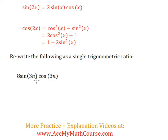So let's rewrite 8 sin 3n cos 3n as a single trig ratio. Of course, we're going to be using double angle identities.